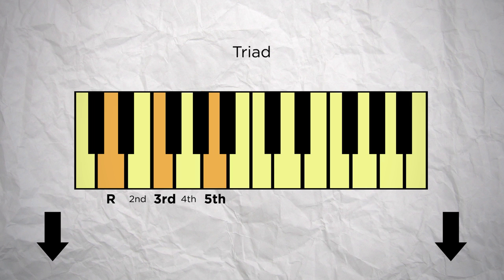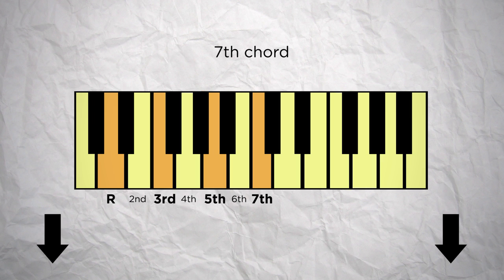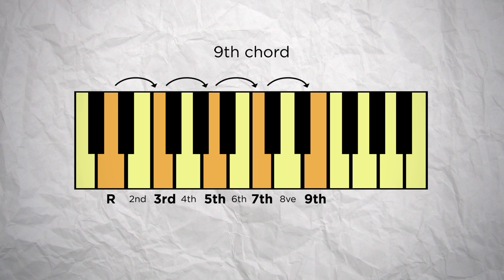I'll leave a link in the description to the episode that talks about triads. If you keep 4 notes, you have a 7th chord which is made of a tonic, a 3rd, a 5th and a 7th. I'll also leave a link in the description to the episode that talks about 7th chords. And if you keep 5 notes, then you have a 9th chord, which is made of a tonic, a 3rd, a 5th, a 7th and a 9th. The nature of this 9th chord depends on the intervals separating each note, and that is what we'll see now.